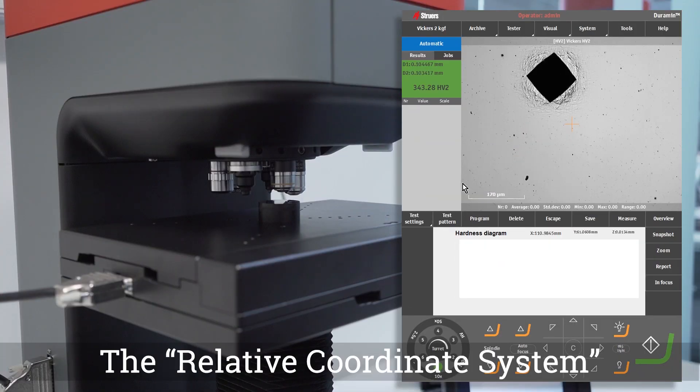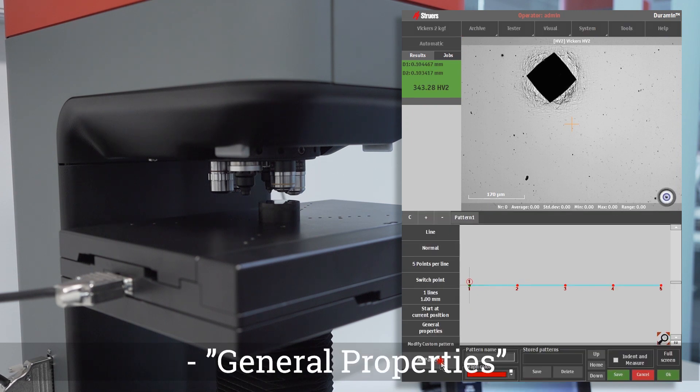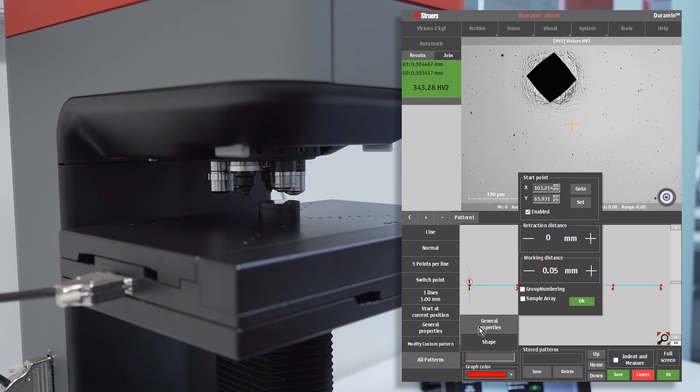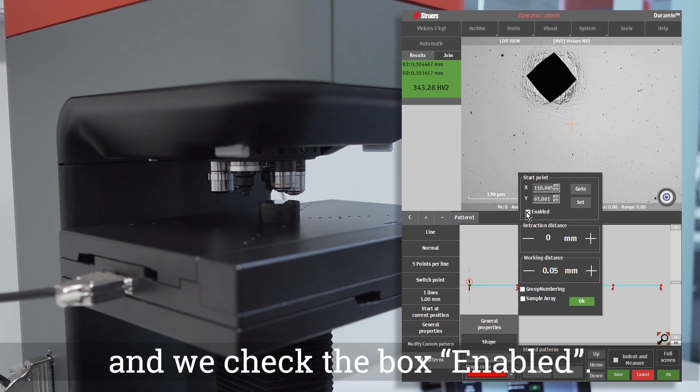The relative coordinate system is set from Test Pattern, All Patterns, General Properties. Here we define the center of the relative system, we click on Set and we check the box Enabled.